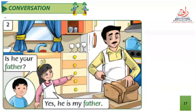Let's go to the next picture. What do we see here? We can see Yushi. He wants to ask a question for this girl. Who is this? Father. What is this place? It's a kitchen. So let's go to the question first. What do you want to ask Yushi? Is he your father? Is he your father?